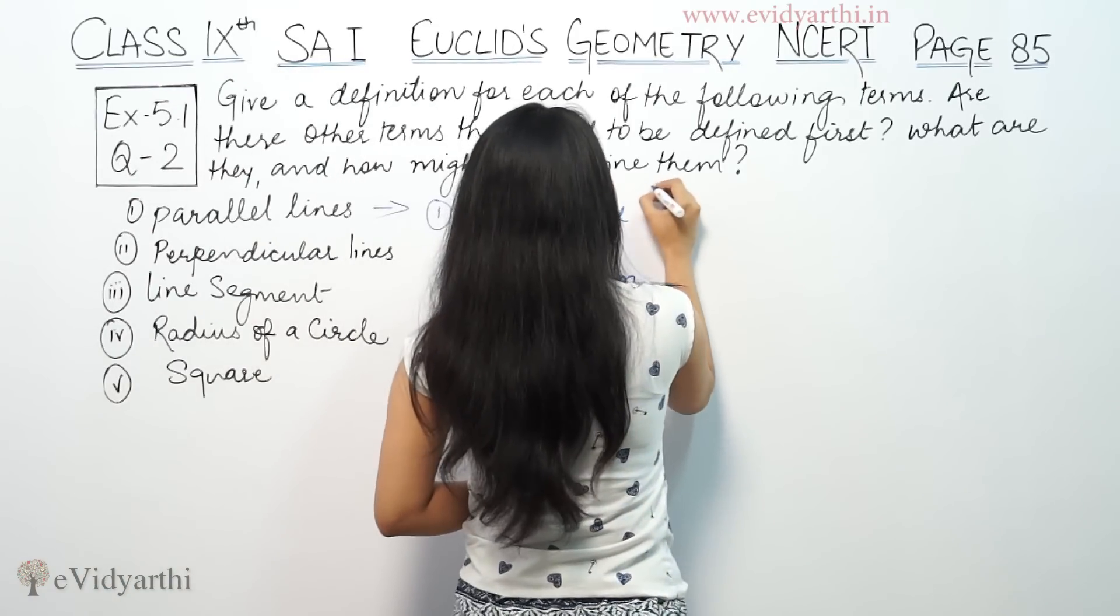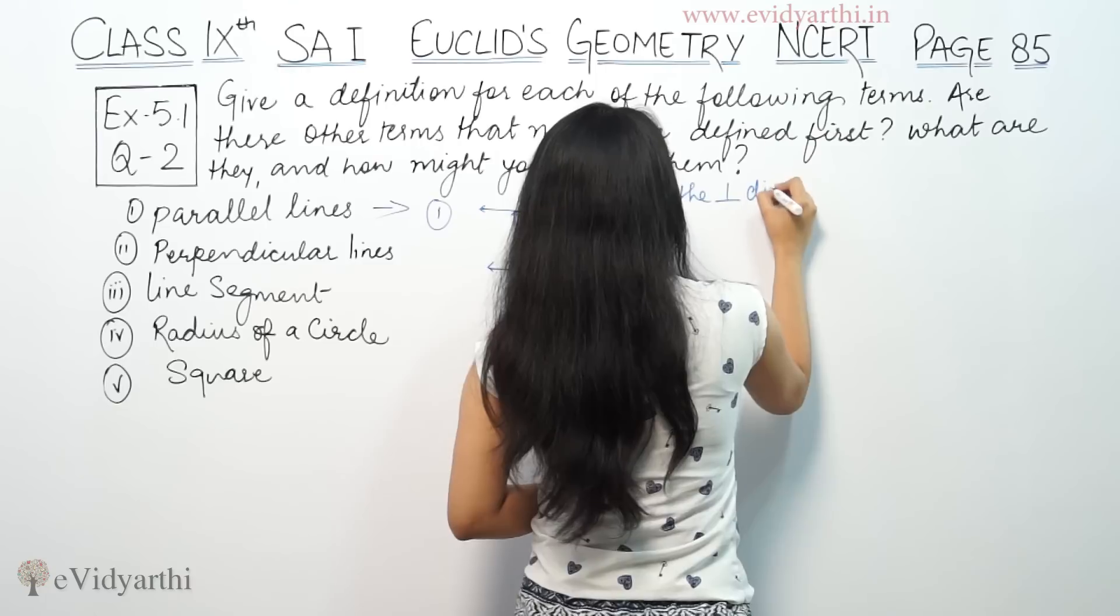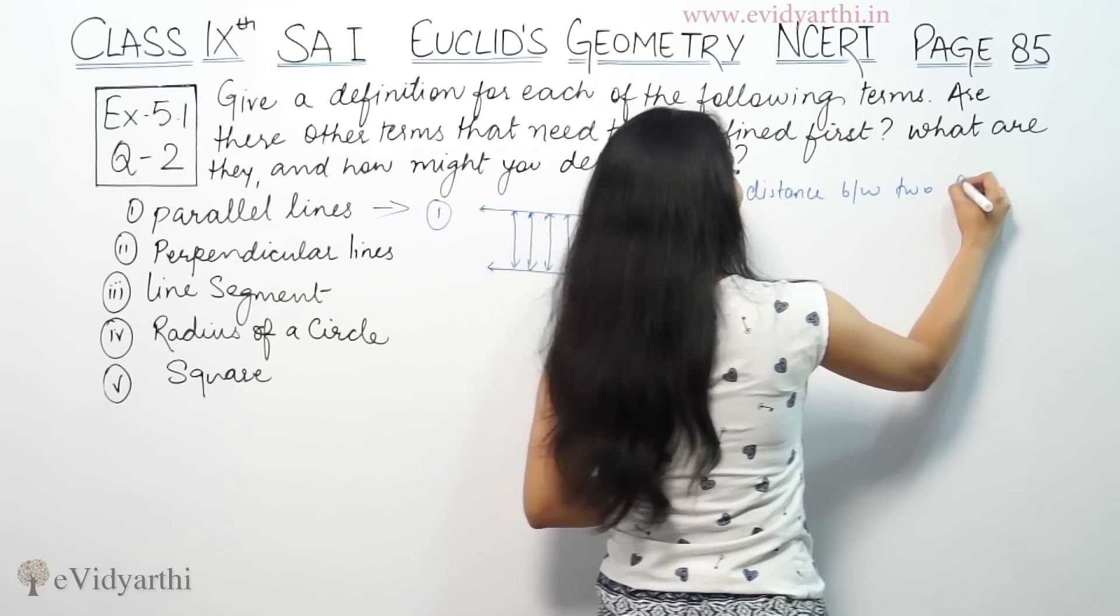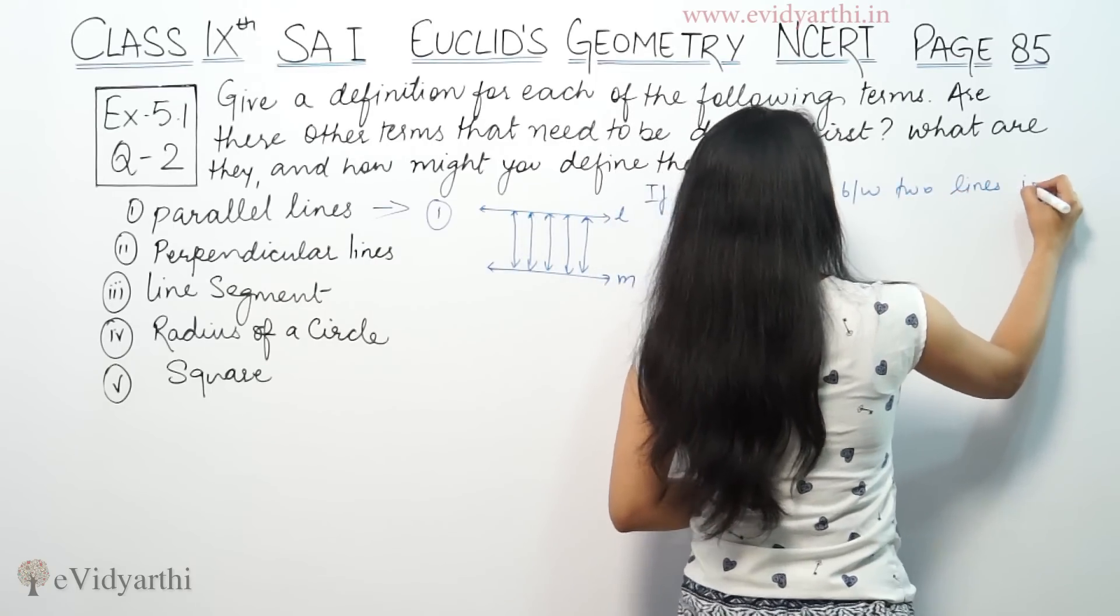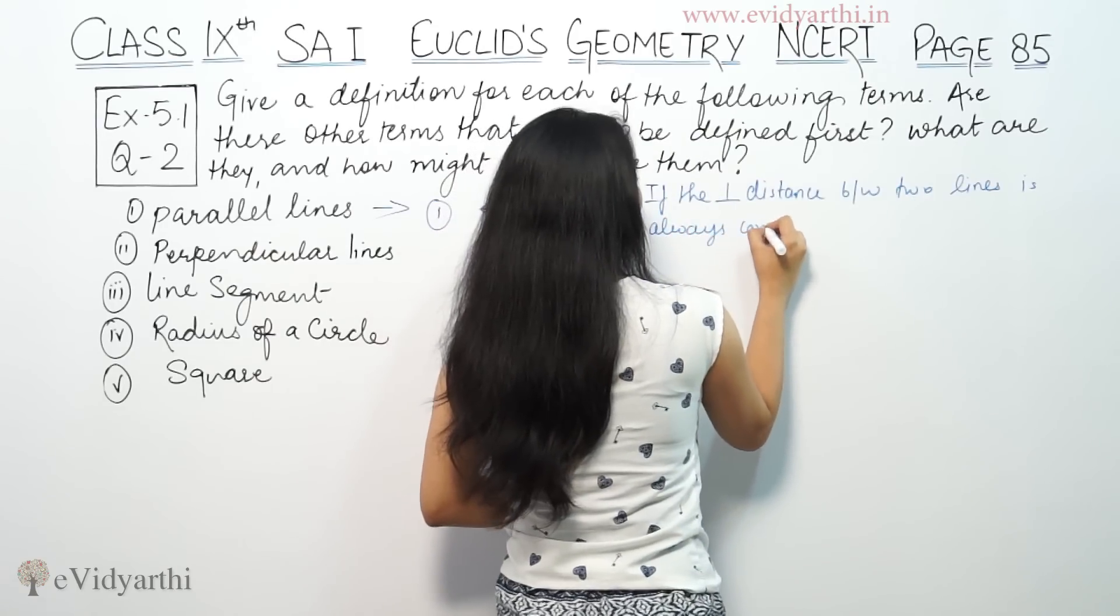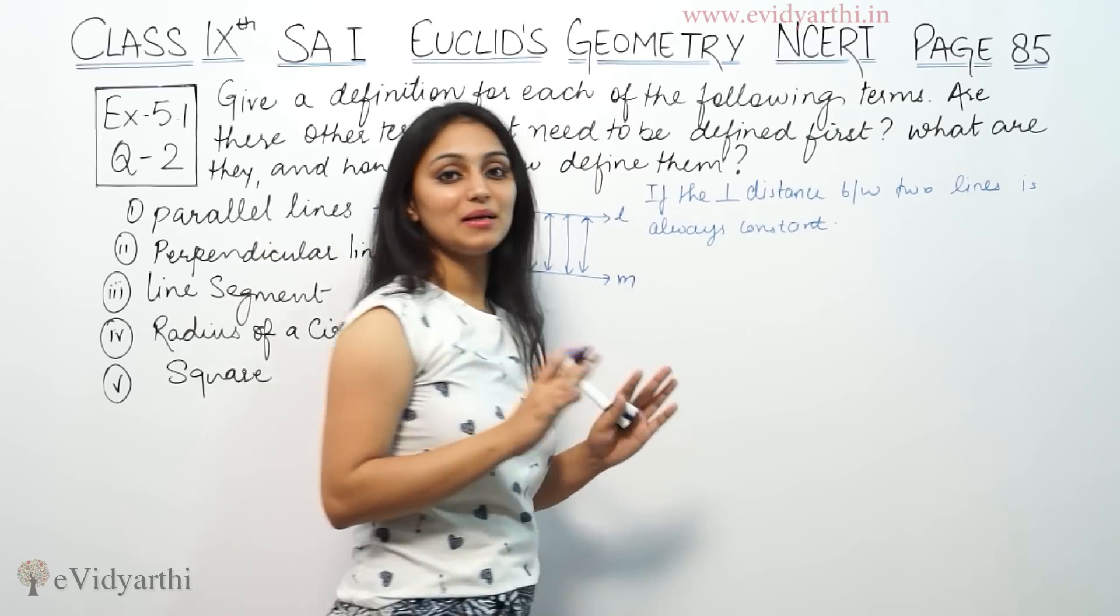If the perpendicular distance between two lines is always constant, then they are parallel lines.